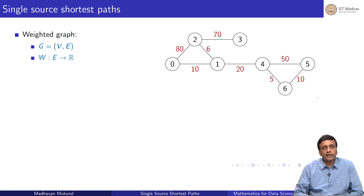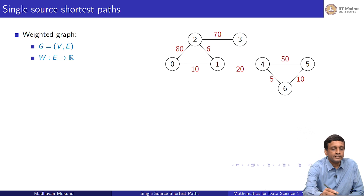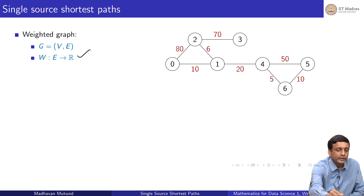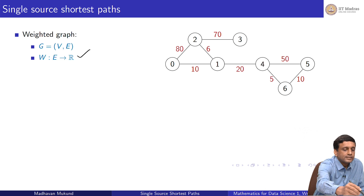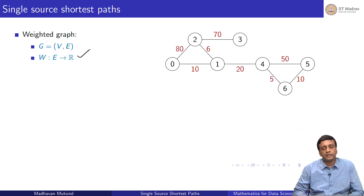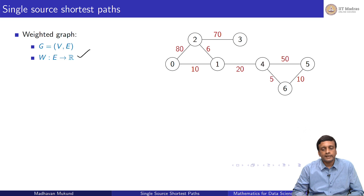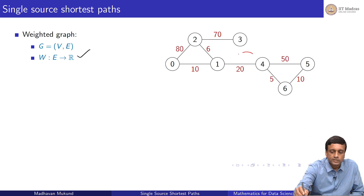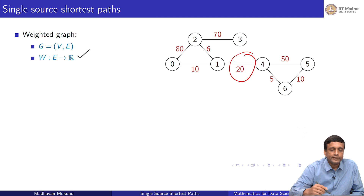A weighted graph is just a graph which has, in addition, a weight function. This weight function assigns to every edge some real number. Here on the right we have a graph where every edge has a number written against it — for example, the weight of the edge from 1 to 4 is 20.